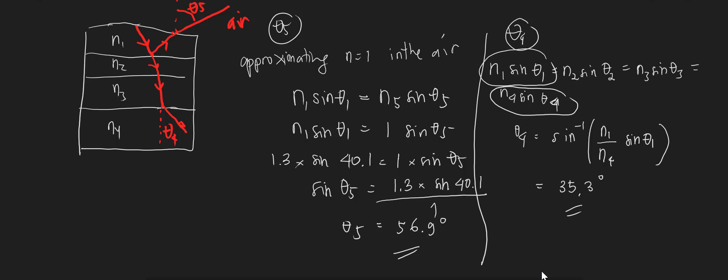To summarize: when light travels from n1 through n4, the key equation is n1 sin(theta1) = n2 sin(theta2) = n3 sin(theta3) = n4 sin(theta4). When it reflects back to air, n1 sin(theta1) = n5 sin(theta5). So theta5 = 56.9 degrees and theta4 = 35.3 degrees. This concludes the first question about electromagnetic waves and the fundamental characteristics of light.